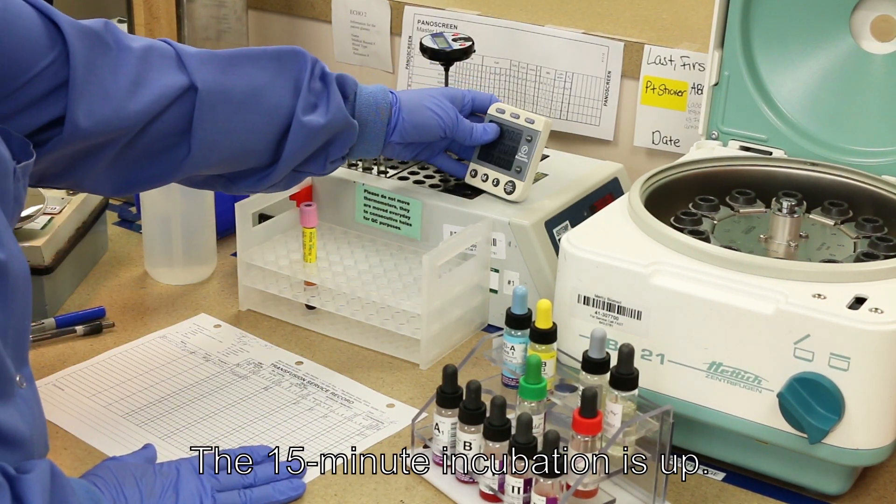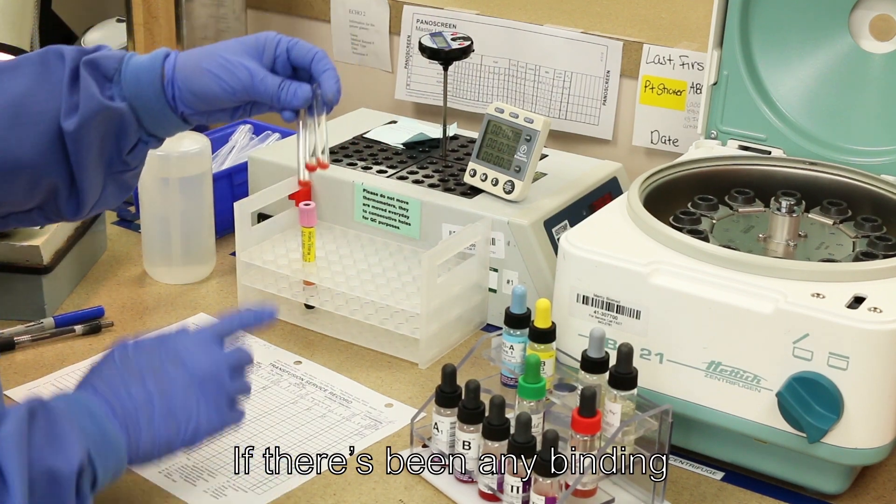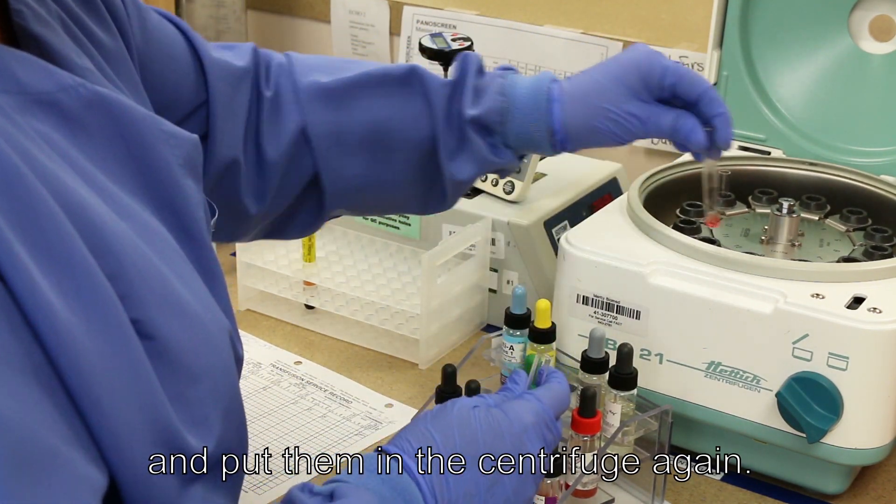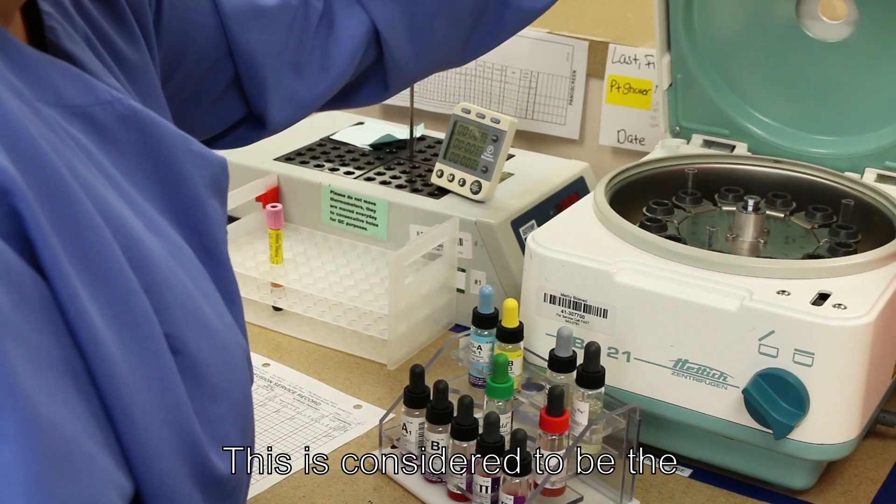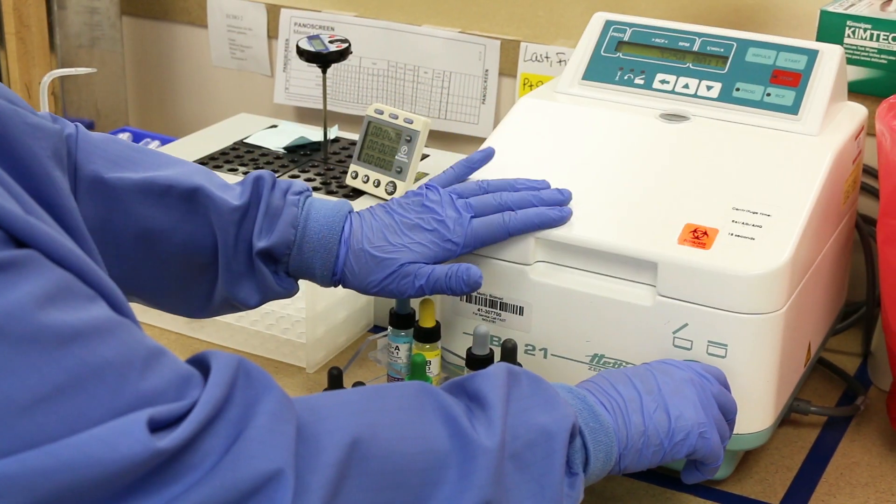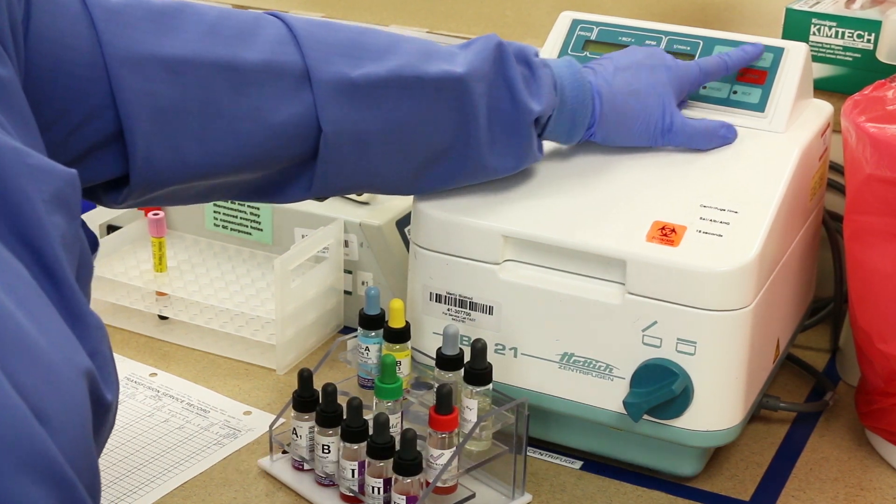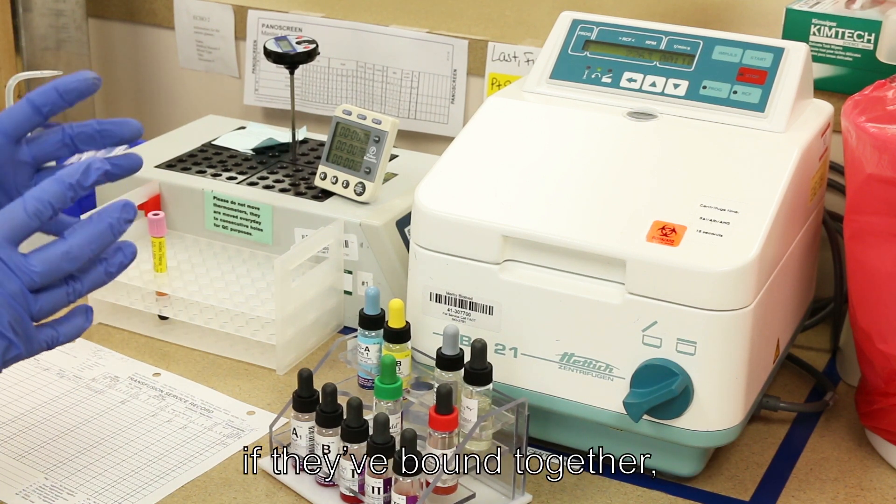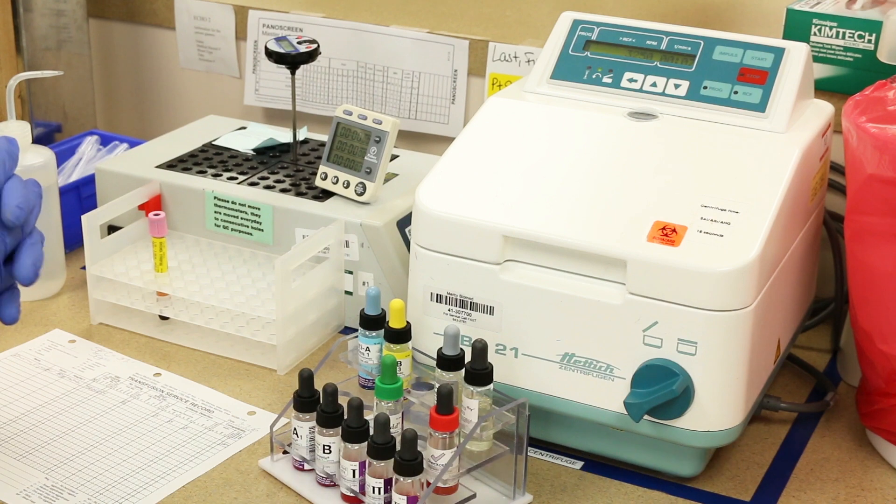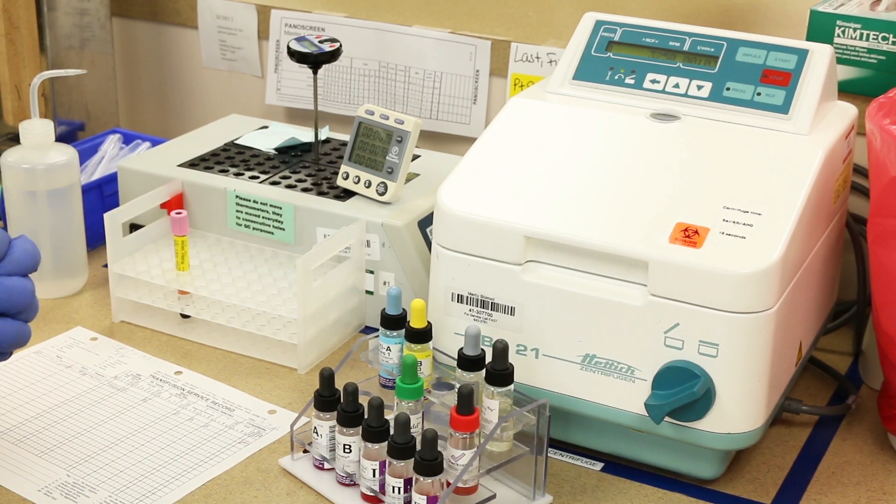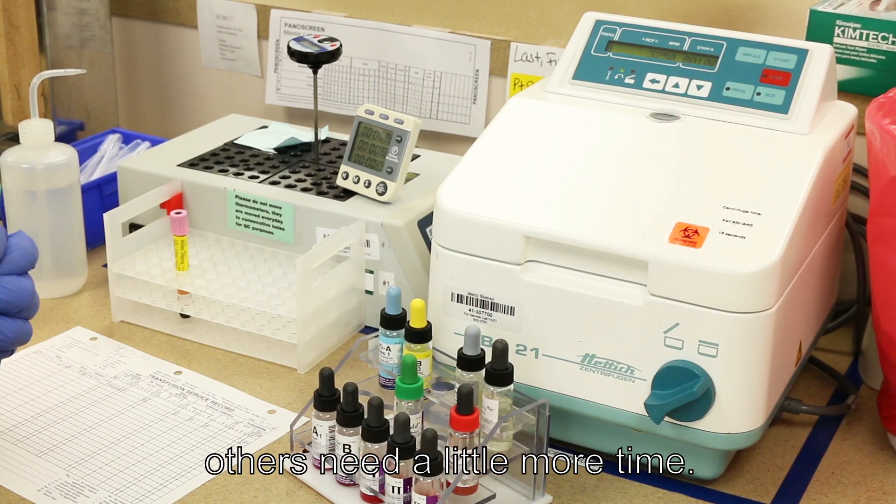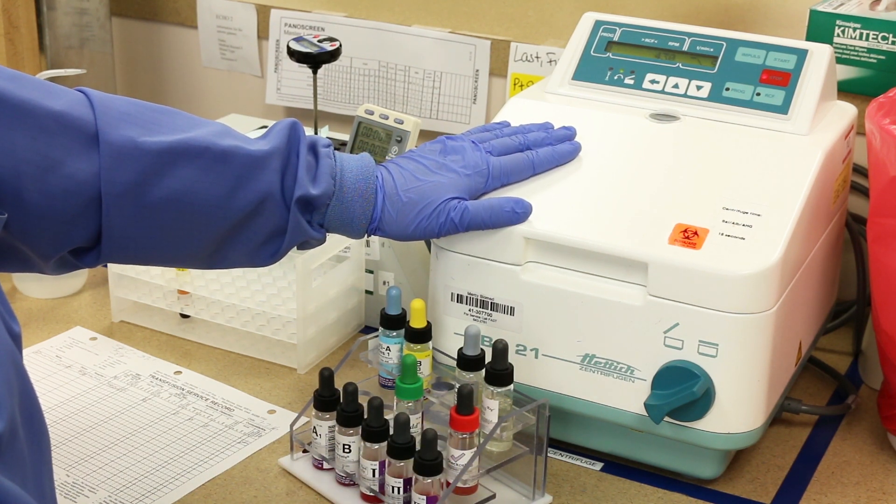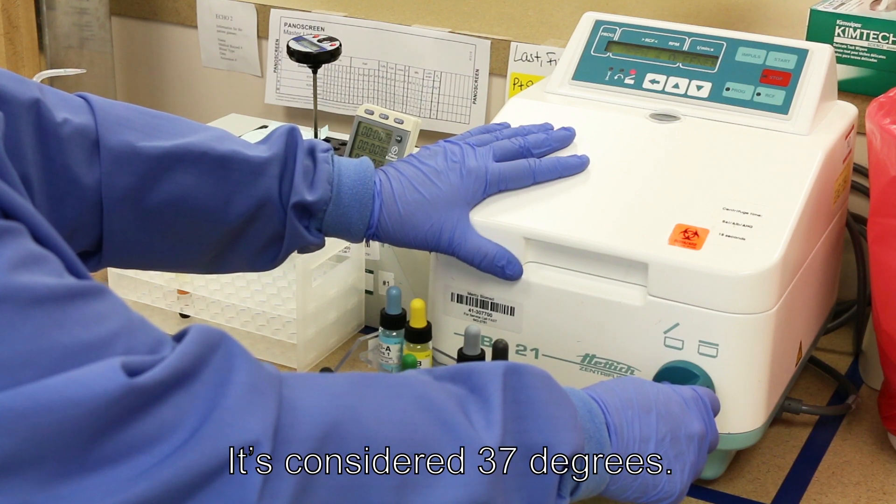So our timer just went off. 15 minute incubation is up. If there's been any binding of the antigen antibody, I need to spin that reaction so that I can visually see it. So I need to take my tubes and put them in the centrifuge again. This is considered to be the 37 degree phase, making a triangle. Same spin time and 15 seconds. What we're doing here is allowing the antigen antibody, if they bound together, we're forcing that reaction to happen. That's what the incubation was for, to allow the antibody a chance. Some antibodies can react right away. Others need a little more time. This is our second phase. It's considered 37 degrees.